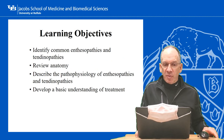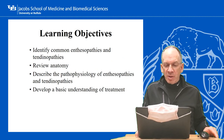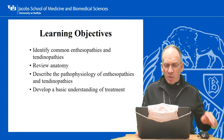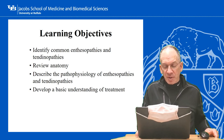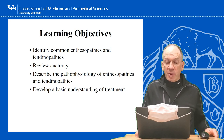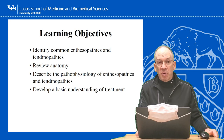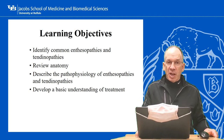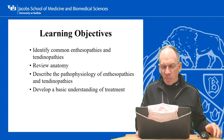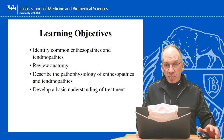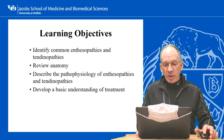Here are the objectives for today's talk: identify common enthesopathies and tendinopathies, review anatomy, describe the pathophysiology of enthesopathies and tendinopathies, and develop a basic understanding of treatment. These tend to be high-yield Step 1 areas, so hopefully that will be helpful at some point.